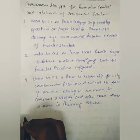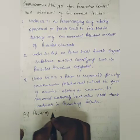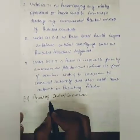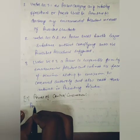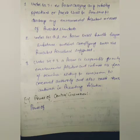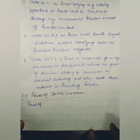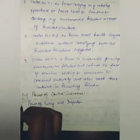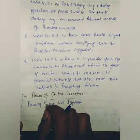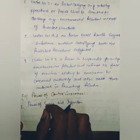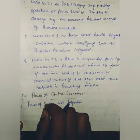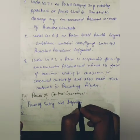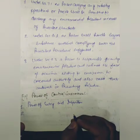Next, we talk about the powers of the central government. The first power is power of entry and inspection. Under Section 10, central government officers have the power to enter and inspect any place for the purpose of performing any functions entrusted under the legislation. They can enter your premises at any time and inspect any plant or department — they have that right.